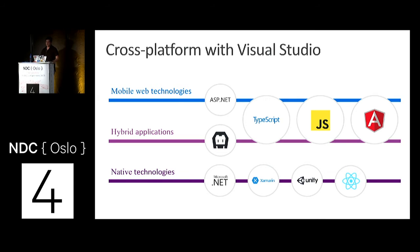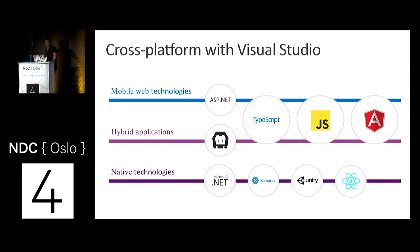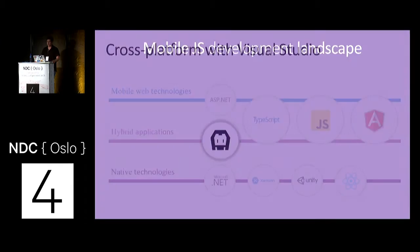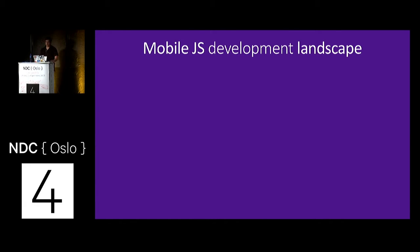We have native technologies: .NET, Xamarin, Unity, React Native — something we announced at the last Facebook conference with support for Windows in React Native. We also have mobile web technologies: ASP.NET, Responsive Web, familiar to many people for many years. And we have hybrid applications, where Apache Cordova belongs. The languages we use are JavaScript, TypeScript transpiled to JavaScript, and frameworks like Angular or Ionic. But today we're going to focus on Cordova. Before getting into more details about what Cordova is and how it works, let me try to recap where we are in the mobile JavaScript development landscape.